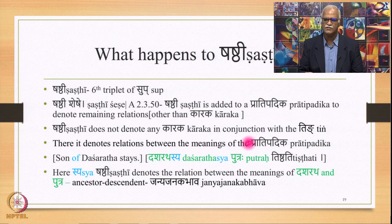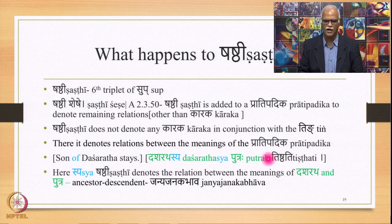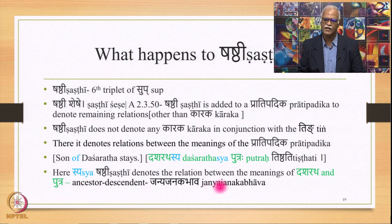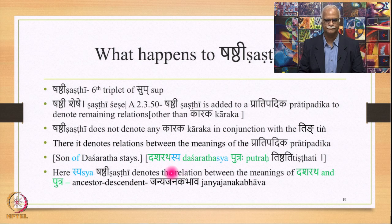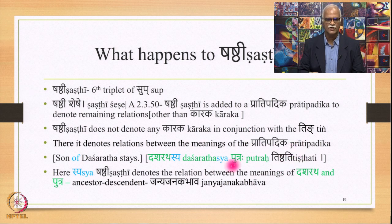For example, consider the meaning 'son of Dasharatha stays' — 'Dasharatha sya putraha vishthati.' Here Sya, which is Shasthi, denotes the relation between the meanings of Dasharatha and Putra. That relation is the ancestor-descendant relation — Janya-Janaka Bhava. Dasharatha is the Janaka (father), Putra is the Janya (son). This Janya-Janaka Bhava is expressed by this Sya. There is a Ting which expresses Kartru Karaka, which is nothing but this Putra. So this Sya is not related with this Ting and not related with any of the Karakas — Shasthi does not express any Karaka when in conjunction with the Ting.